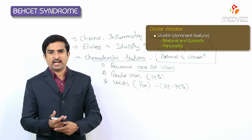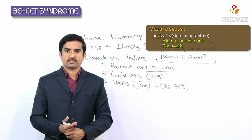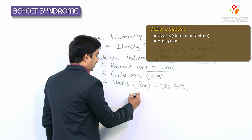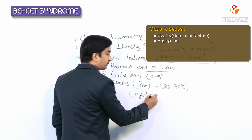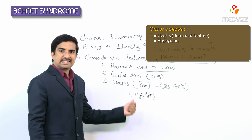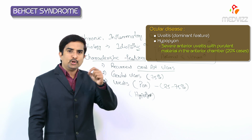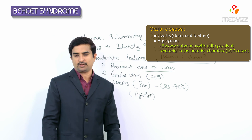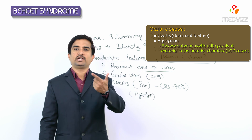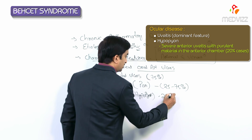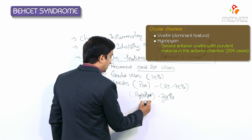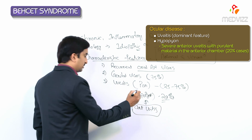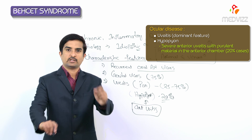Isolated anterior uveitis is rare but may be seen in approximately 20% of cases. Hypopion — a severe anterior uveitis with purulent material in the anterior chamber — is characteristically seen in about 20% of patients with Behçet's syndrome. This is an important MCQ point: 20% of Behçet's patients may present with hypopion.